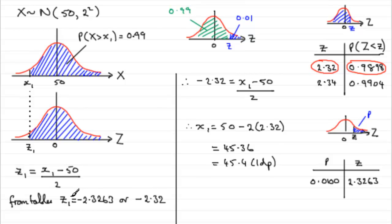And, if you used z1 was minus 2.3263 instead of the minus 2.32, you would find that x1 turned out to be 45.3474. But, I'll leave you to do that. Which is equal to 45.3 to 1 decimal place. Either way, it's going to be an answer somewhere in this vicinity. I hope that's given you some idea then how to do that particular part of the question.